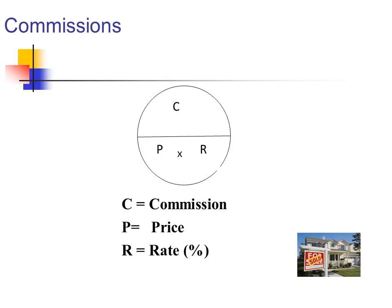Commissions. Here's our formula: C-P-R. Think of when you get your first commission check, you'll need C-P-R — it'll be so huge. C being commission, P being the price of the property, and R being the commission rate.